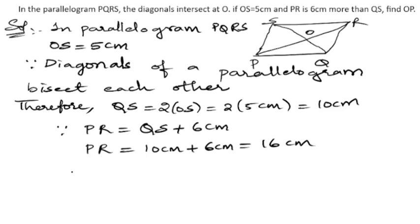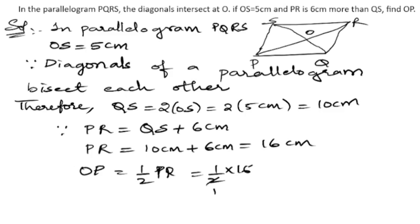We know the diagonals bisect each other, so OP is half of PR. We can write OP equals half of PR, which is half of 16, so 2 eights are 16, giving us 8 centimeters. So the required length of OP is 8 centimeters.